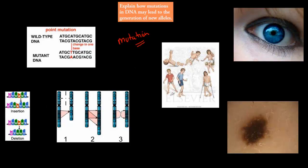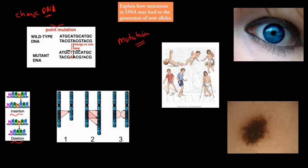So first of all, what is a mutation? A mutation is just a change in the DNA sequence that usually is there. There are a couple of different examples: insertion, deletion, and point mutation. A point mutation is just where one of the actual bases has changed. Insertion is where one base has been inserted into the original DNA. And deletion is where one actual base has been deleted. That's a mutation — it's just a change in the DNA itself from the original DNA.